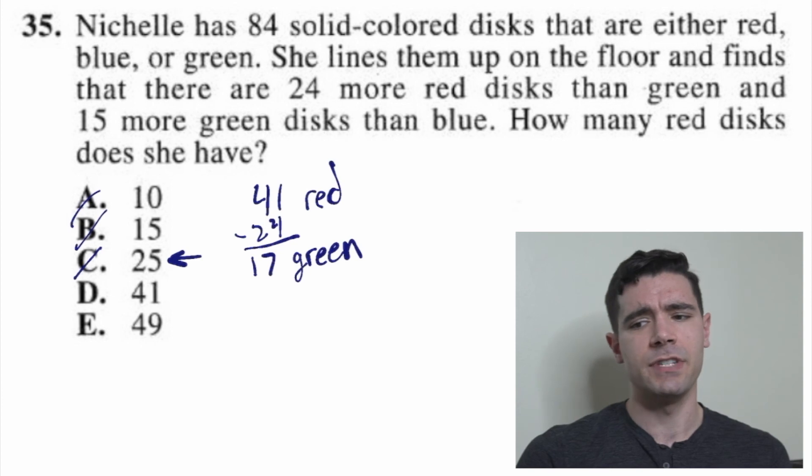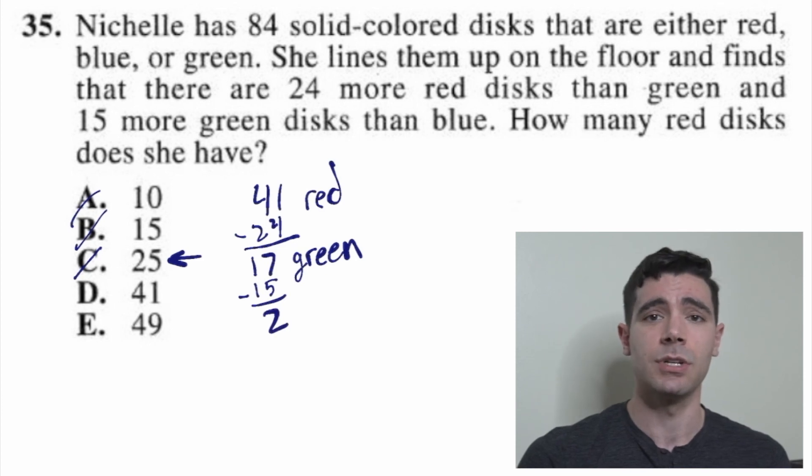What else do we know? She has 15 more green disks than blue. All right, 17 is 15 bigger than what? Again, calculator's already out. 17 minus 15 equals 2. So now we have 41 red, 17 green, and 2 blue.